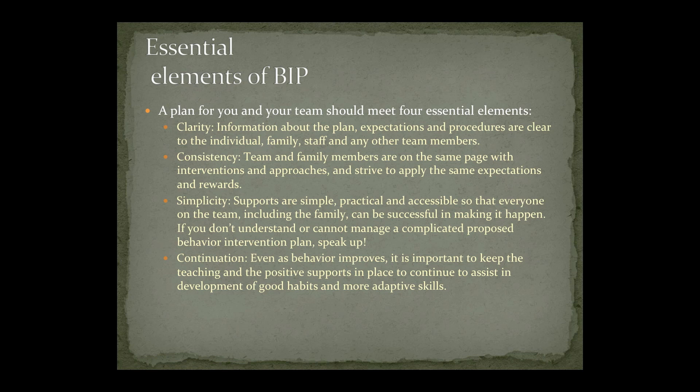The second element is Consistency: the team and family members are on the same page with interventions and approaches and strive to apply the same expectations and rewards. The third is Simplicity: supports are simple, practical, and accessible, so that everyone on the team, including the family, can be successful in making it happen.